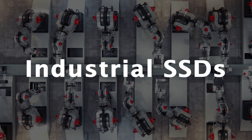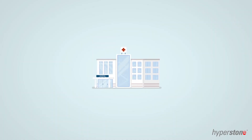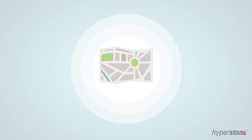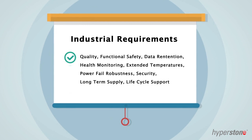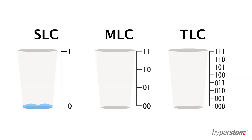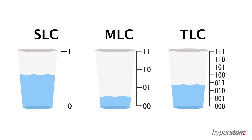Industrial SSDs focus on reliability. They can be found in environments where secure data transactions are vital, such as medical equipment, navigation systems, autonomous driving, and black boxes in trains and planes. They demand quality, extended temperature ranges, data retention, and powerful error correction coding. Industrial SSDs actually use a range of flash technologies — SLC, MLC, and even TLC flash.